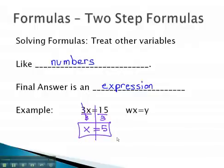It is much the same pattern we'll use if we have more variables, say, wx equals y. x currently is multiplied by w. To get x alone, we will divide both sides by w. Our final answer is an expression, that fraction y over w.